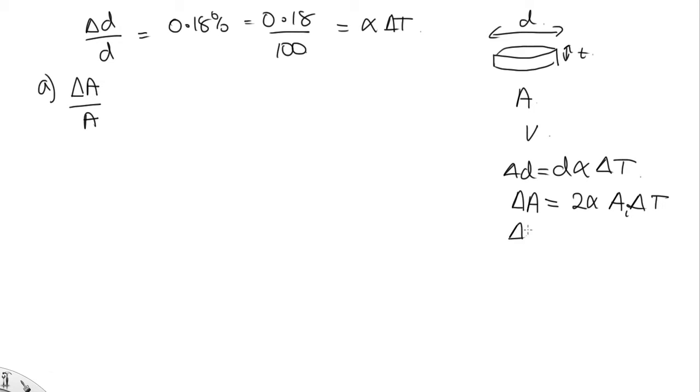And so the change in area over area is equal to 2 alpha delta t, which is 2 times this. So this is 2 times 0.18%, which equals 0.36%.